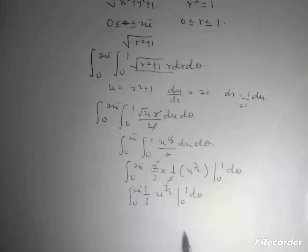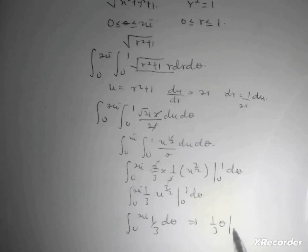So I get the integral from 0 to 2π of 1/3 dθ. This gives me (1/3)θ evaluated from 0 to 2π, giving me 2π/3 as the solution for the surface area.